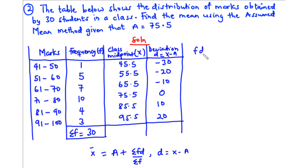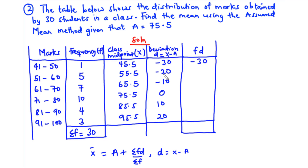Now let's find fd by multiplying each frequency by its deviation: 1 × −30 = −30; 5 × −20 = −100; 7 × −10 = −70; 10 × 0 = 0; 4 × 10 = 40; 3 × 20 = 60. To find Σfd we add all these values: −30 + (−100) + (−70) + 0 + 40 + 60 = −100.